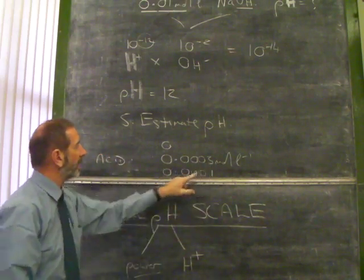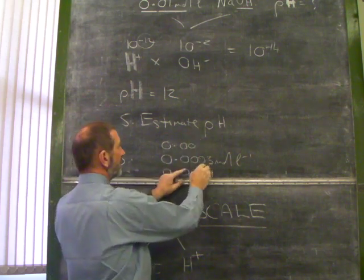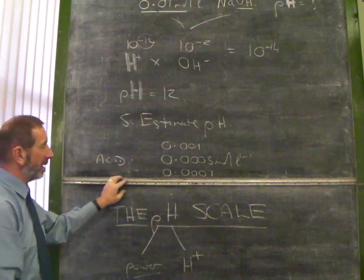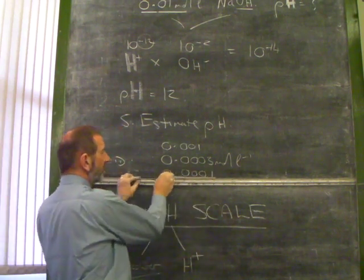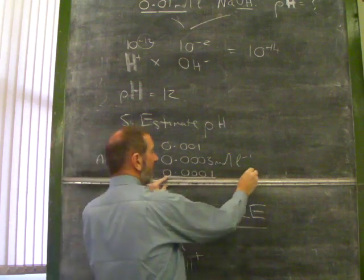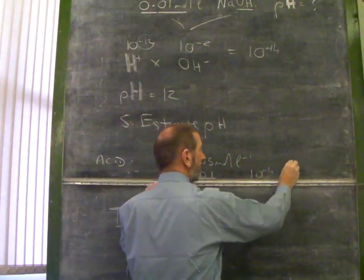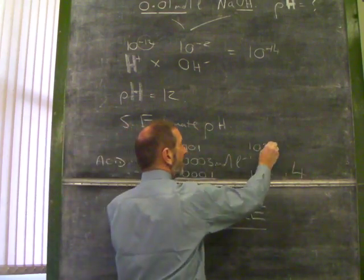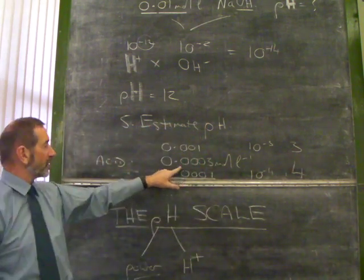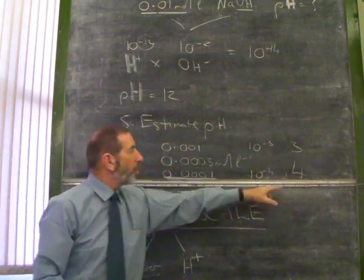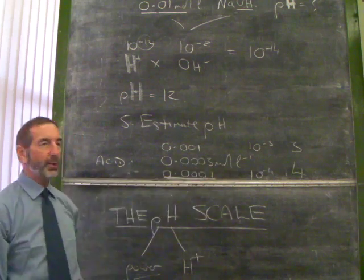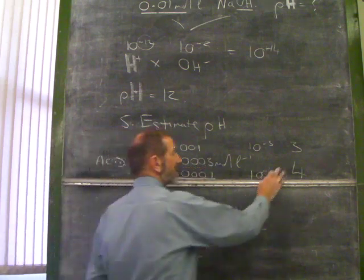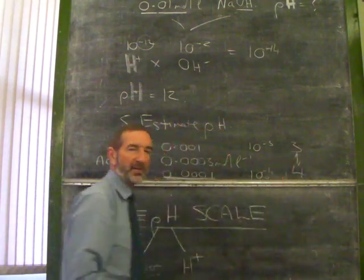That's a bigger number than that. But it's smaller than 0.001. Right? Okay. So if it was this concentration, it would be 4 zeros, it would be 10 to negative 4, pH of 4. If it was this concentration, it would be 10 to negative 3, pH of 3. What's the pH of this acid? Somewhere between 3 and 4. We can't be any more accurate than that. Okay? All you can say is somewhere between these two pH values.